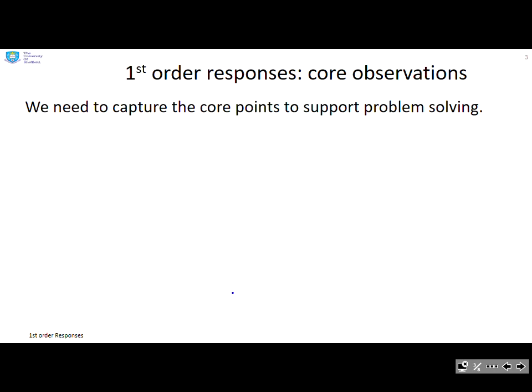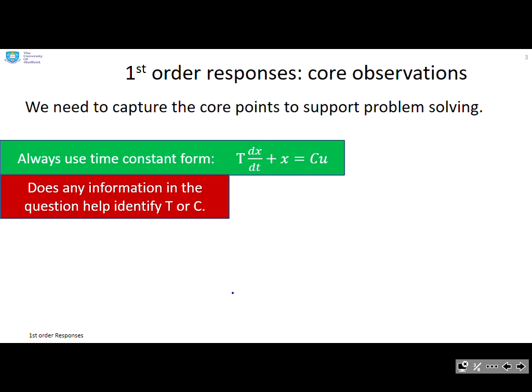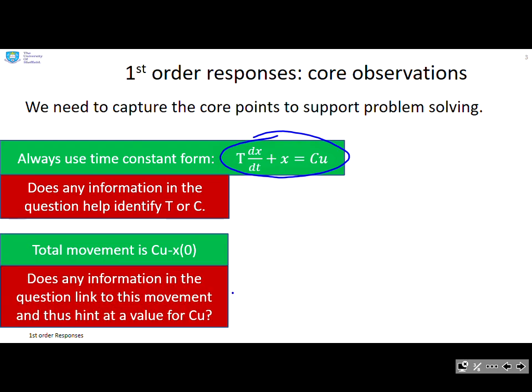So what are the core observations that you should know? Always use time constant form. If you're doing first order responses, always begin by putting the information into time constant form and then ask yourself does any information in the question help you to identify the time constant or the steady state gain. Note that the total movement is Cu minus x(0), so does any information in the question link to this movement. If it does, you may be able to use this to work out a value for Cu or something else.